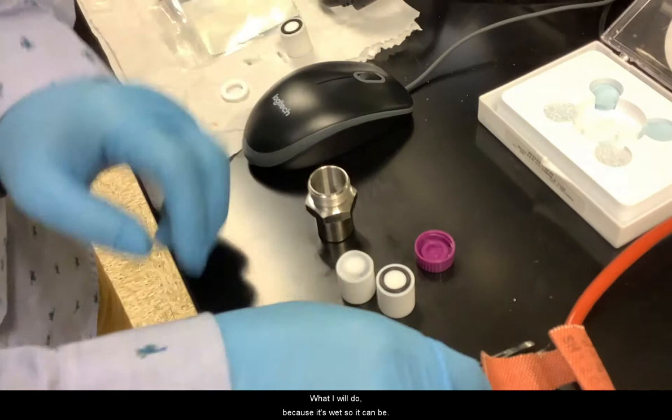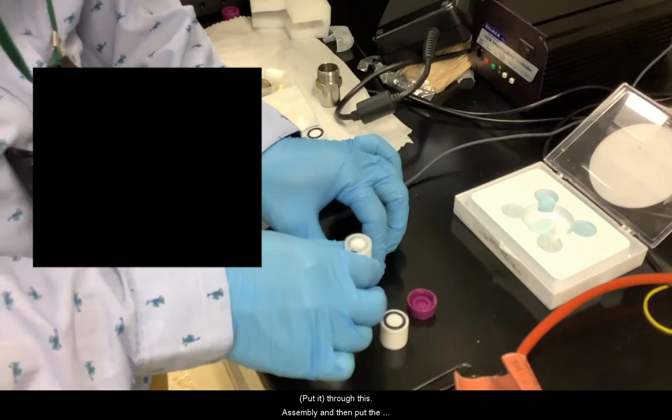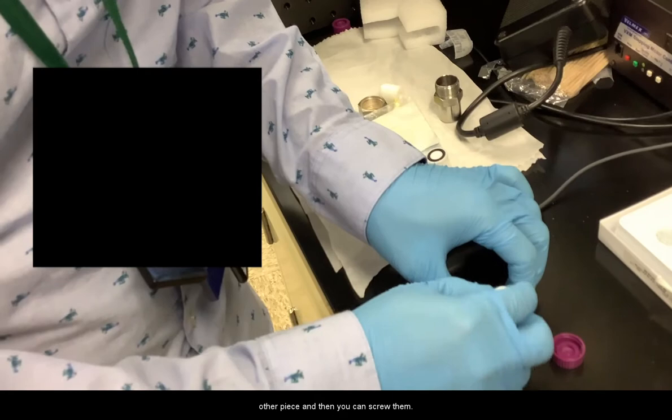On the other side, you put those two spacers to the other block. Then what I do, because it's wet, you push this a little bit and it will be touched better. Then I put that through this assembly and put the other piece on.